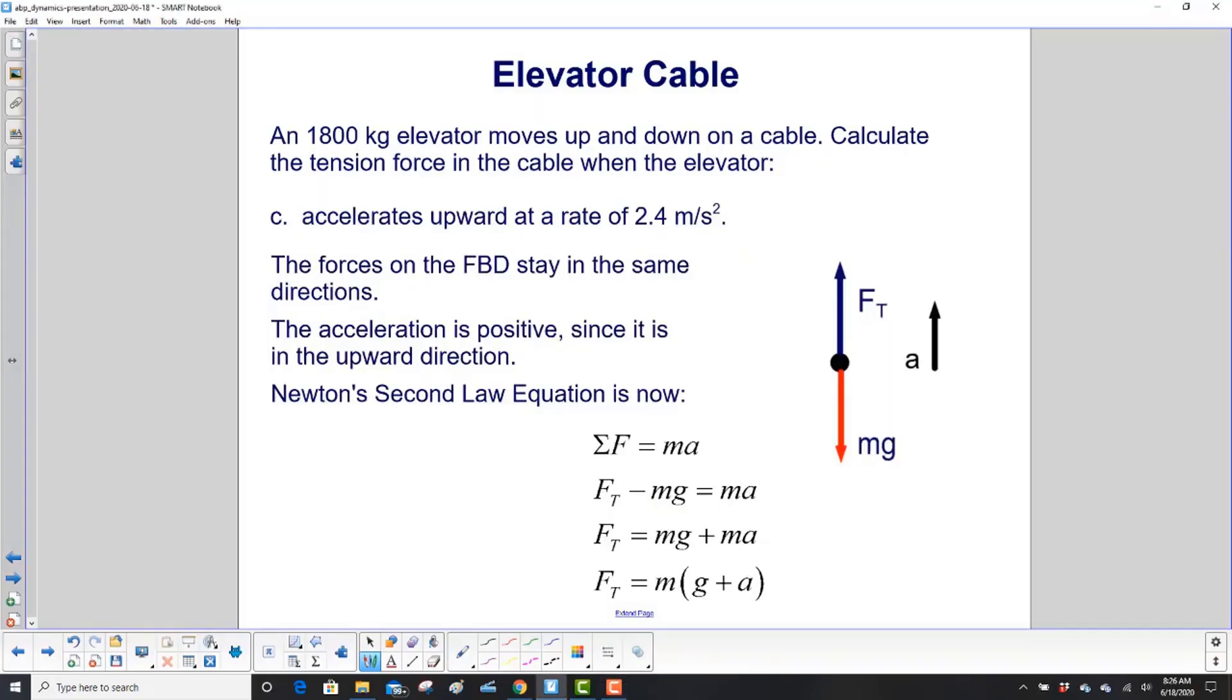Now we're going to have this elevator accelerating upward at a rate of 2.4 meters per second squared. That means its velocity is changing at the rate of 2.4 meters per second in the up direction. Our forces will still be the same: tension still pulling us up. The acceleration is positive this time because it's in the upward direction. We have the sum of the forces equals ma.